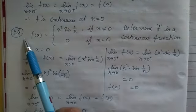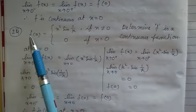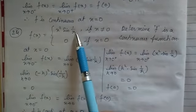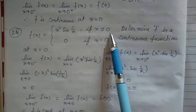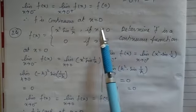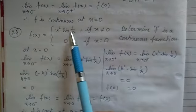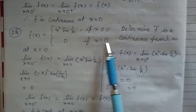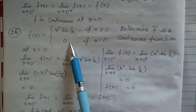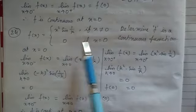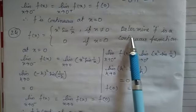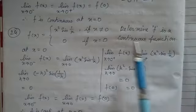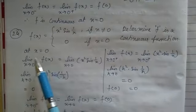This is Question Number 24. f(x) = x²·sin(1/x) if x ≠ 0, and f(0) = 0 if x = 0. For x ≠ 0, both the left-hand limit and right-hand limit use the expression x²·sin(1/x). We need to determine whether f is a continuous function or not.